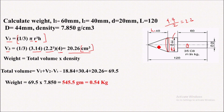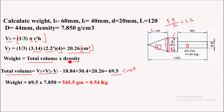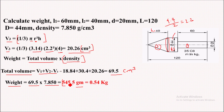Now we add the volumes for all three sections: V1 plus V2 plus V3. After adding, the total volume is 69.5 centimeter cube. Weight equals total volume into density. The density provided is 7.850 gram per centimeter cube and total volume is 69.5, so solving gives the weight as 545.5 gram, and in kg it becomes 0.54 kg. So 0.54 kg is the weight of this material.